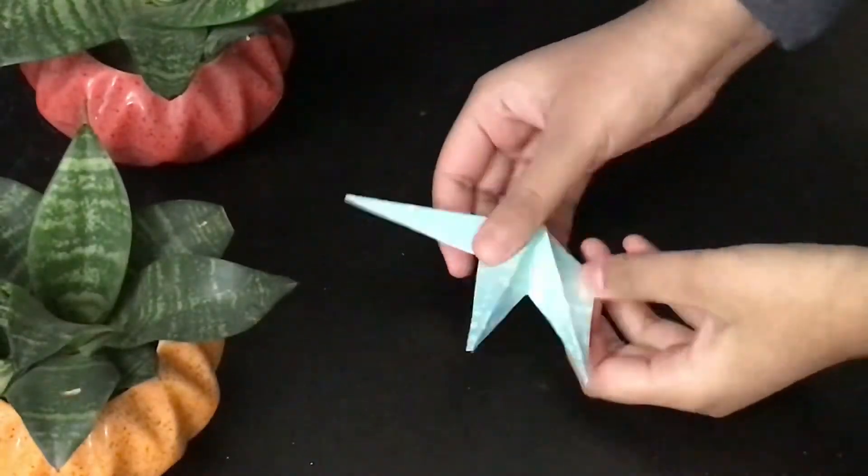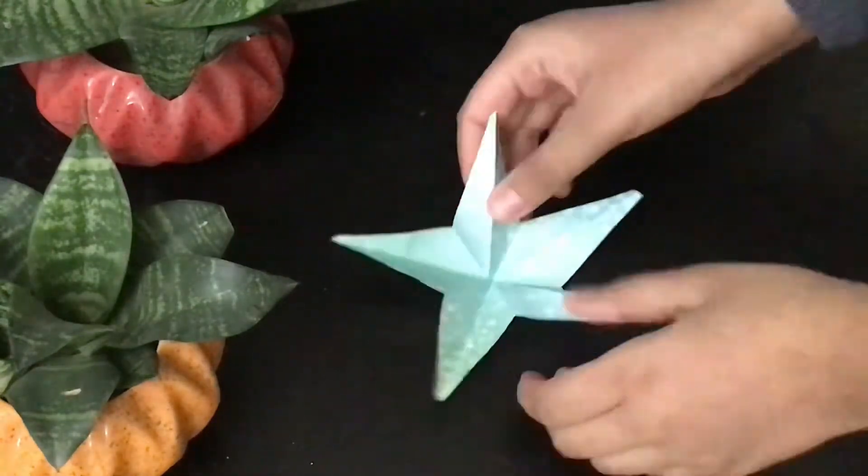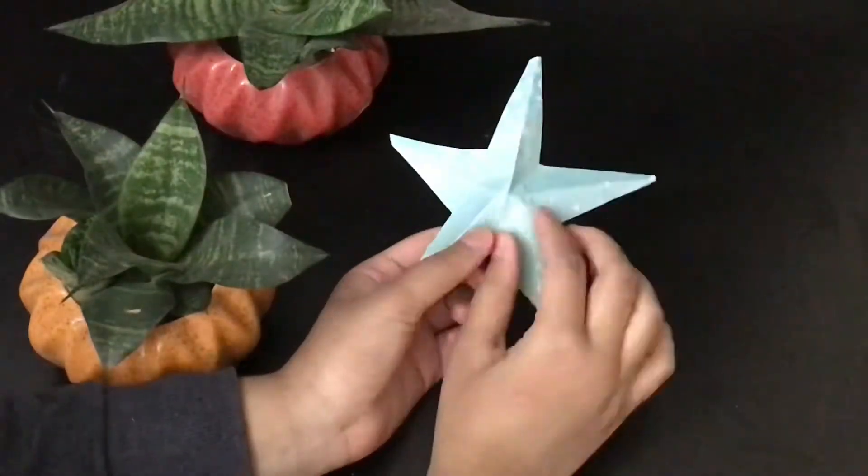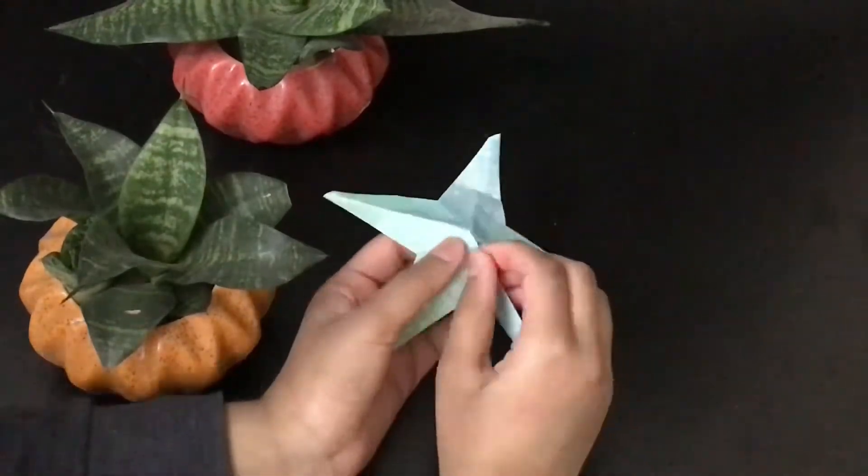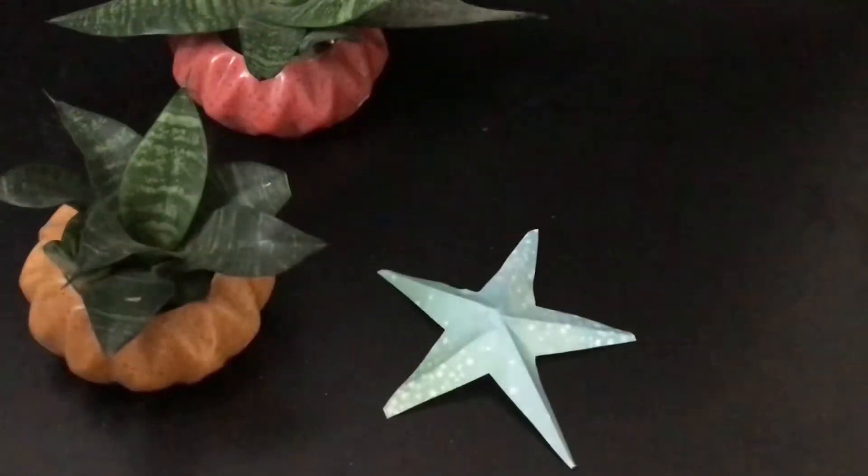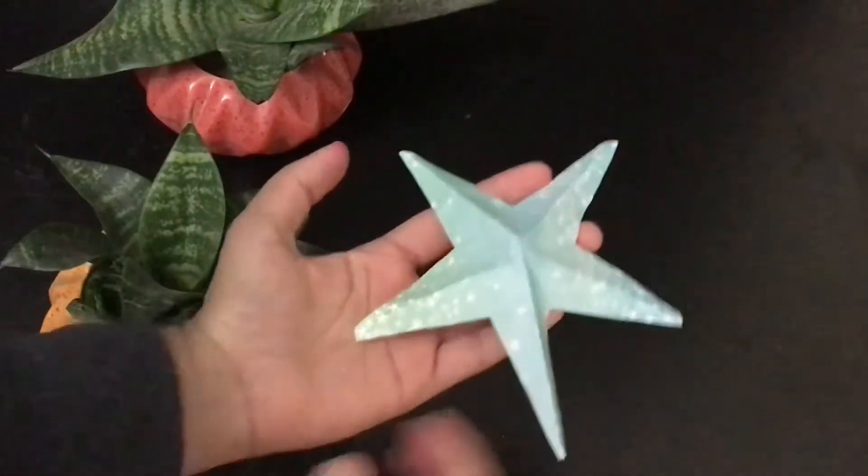Now, open it. It will basically form a star. Fold along the lines and make it look as if it's 3D. And a 3D star is ready.